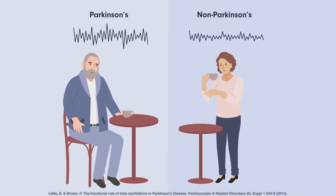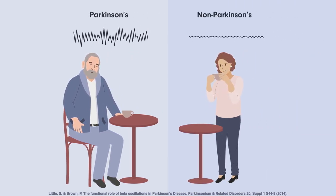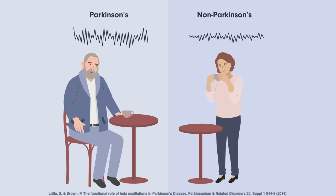This beta activity normally decreases before and during voluntary movement and increases again when staying still.